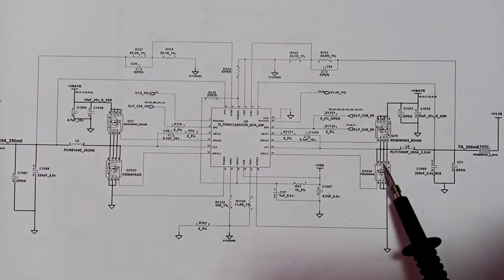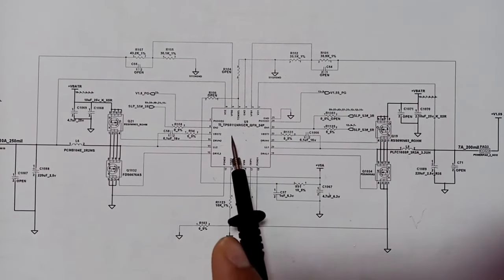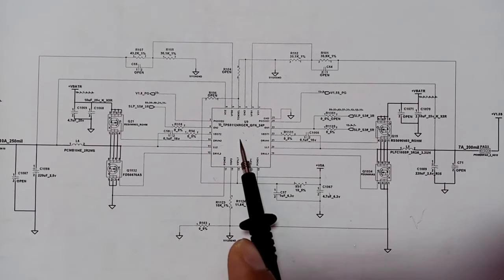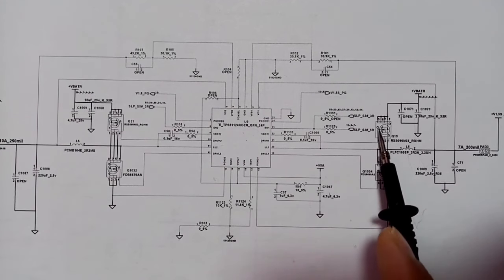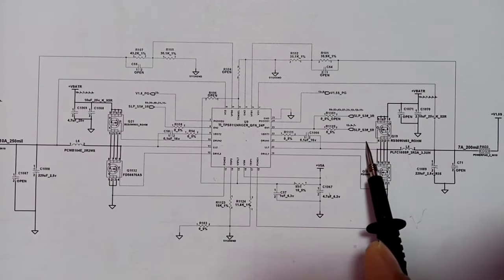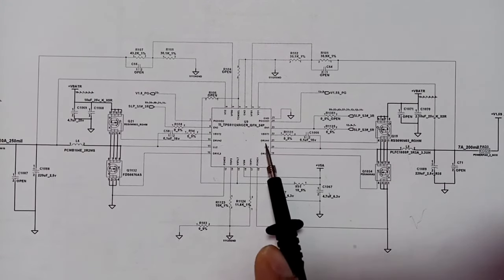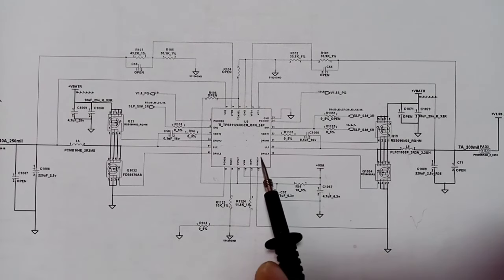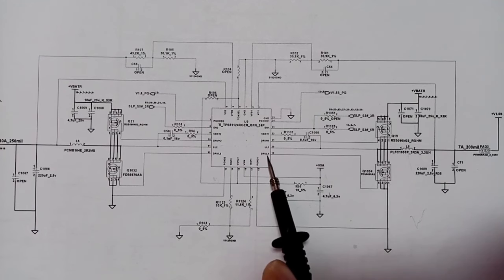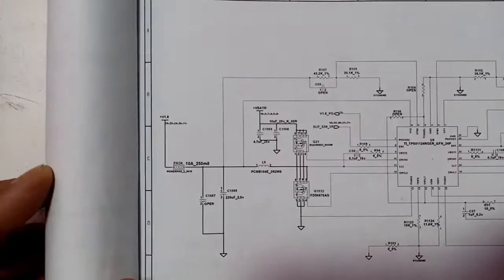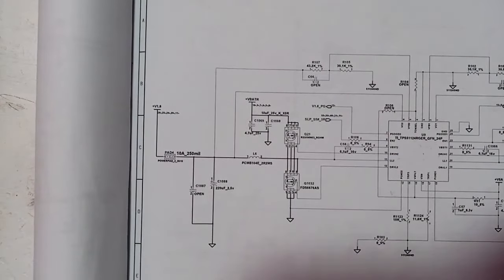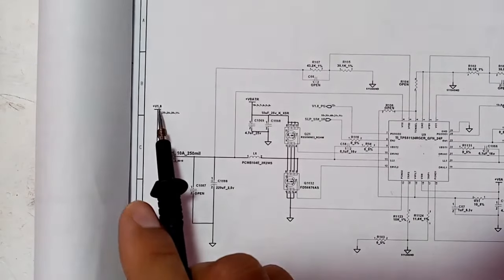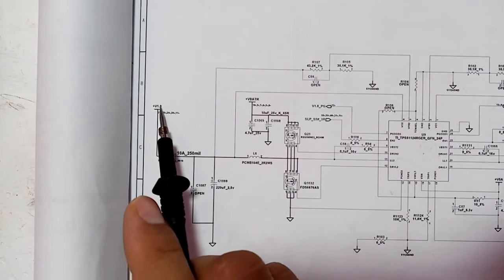The voltage then passes through these MOSFETs, which are controlled by the control IC. The gate is connected directly to this IC — we have the drive high for one MOSFET and the drive low for the other. The same working principle applies to the other channel. Here we have the 1.8V channel.